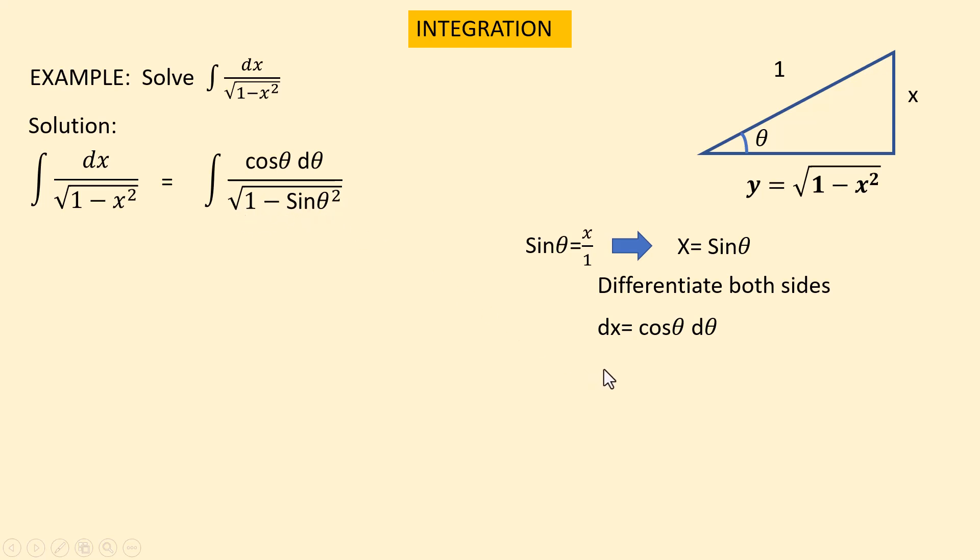Also we have another relationship which is sine squared theta plus cosine squared theta equals 1, and 1 minus sine squared theta equals cosine squared theta.